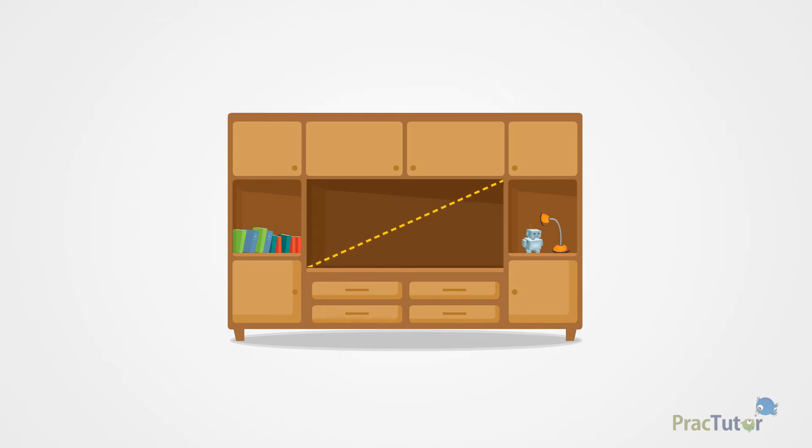If you're buying a television and you have a cabinet you want it to fit in, you could measure the height and width of the space, and then calculate the maximum size of the television by finding the length of the diagonal using the Pythagorean Theorem.